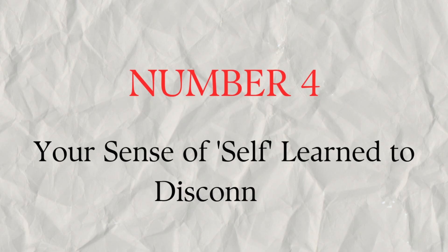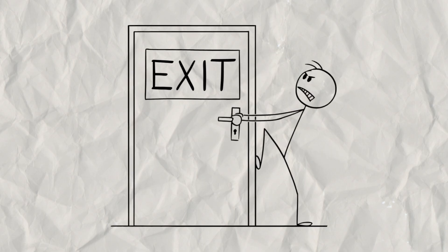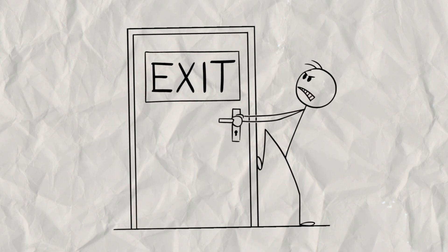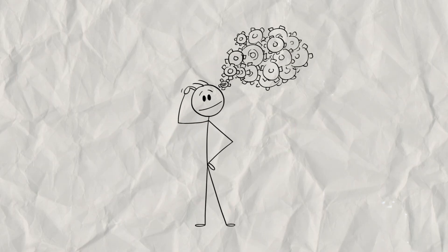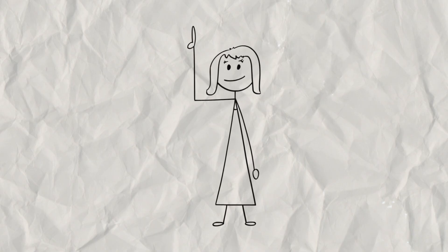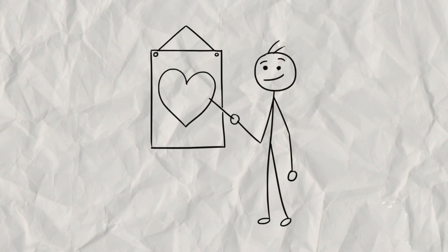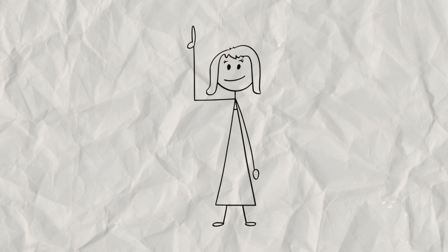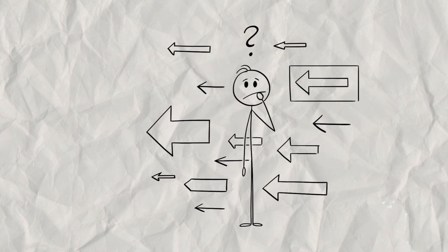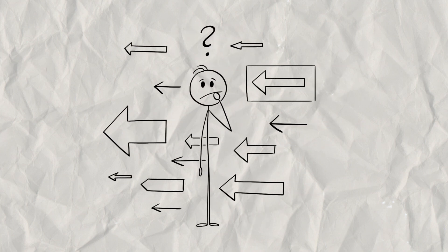Number four, your sense of self learned to disconnect. When physical escape is not an option, the mind finds another way out. It's a defense mechanism called dissociation. Your brain has a network for your sense of self. This includes the insula, which helps you feel your internal body states like your heartbeat or a growling stomach, and the default mode network, which is active when you think about me, your past and your future.